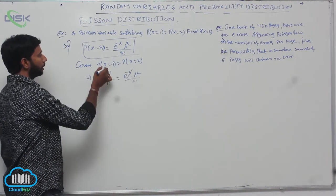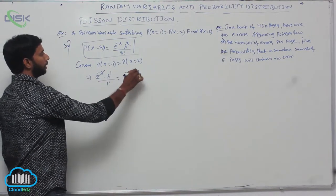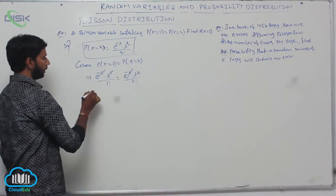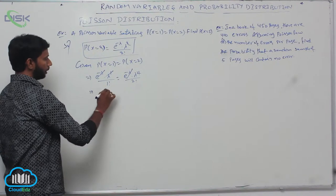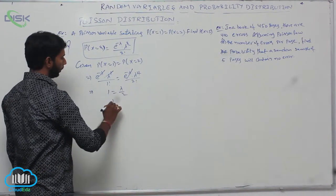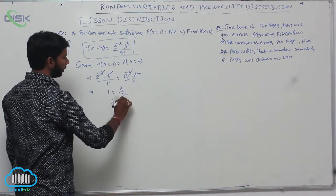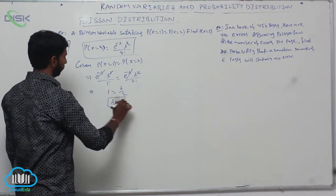Here e power minus lambda cancels on both sides, and lambda cancels, giving 1 = lambda by 2. Therefore, lambda is equal to 2.